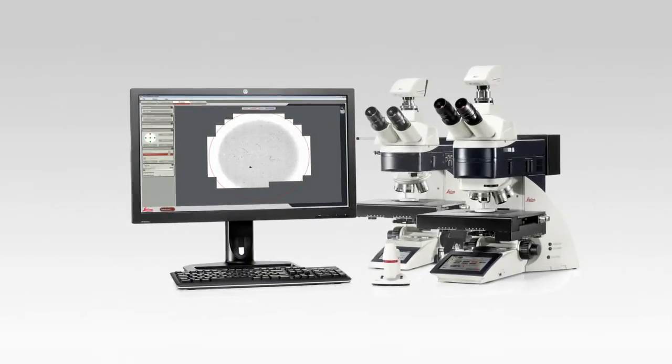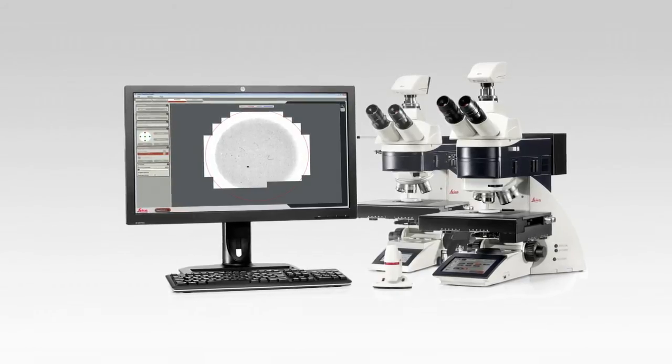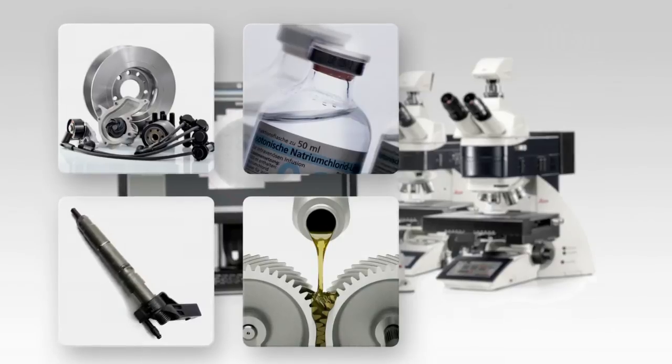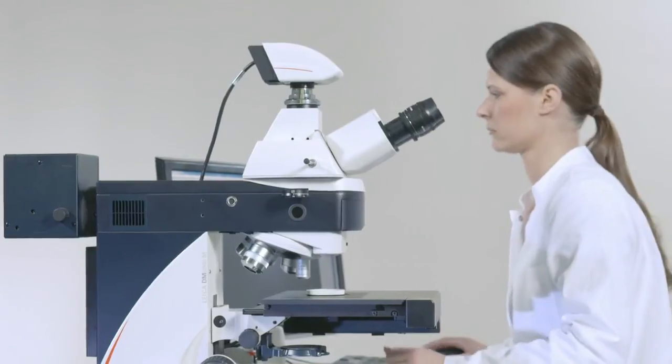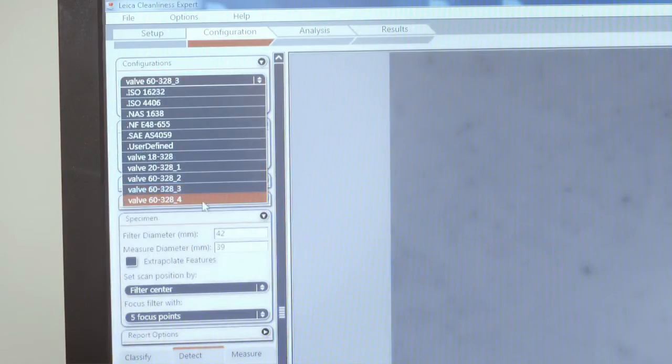With the Leica DM 2700M, DM 4000M LED, and Leica DM 6000M offering an ideal solution for high volume throughput, the high degree of automation makes it simple for every employee to operate the system, allowing measurement to be carried out next to the production line.